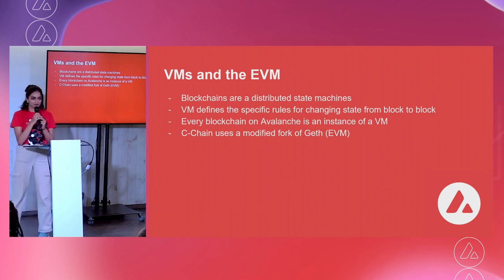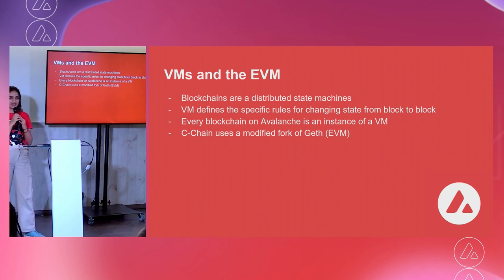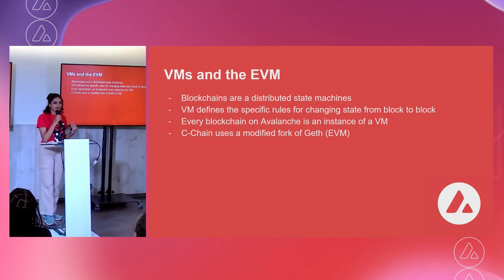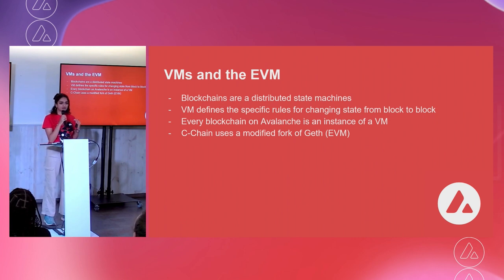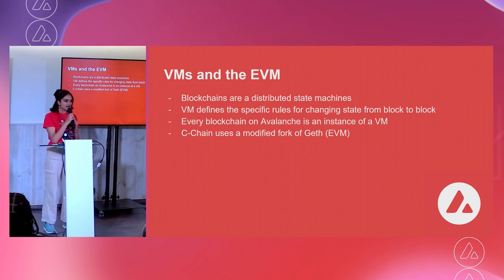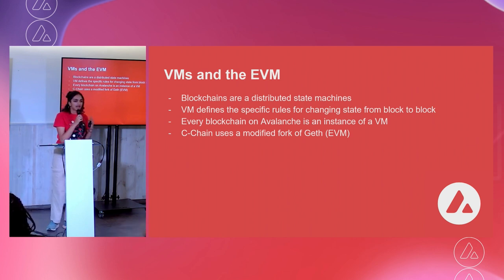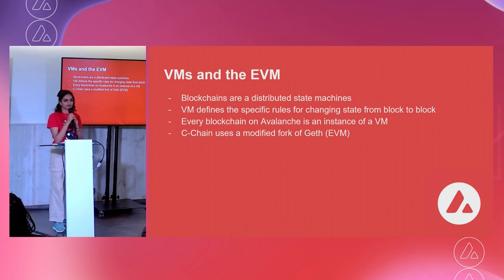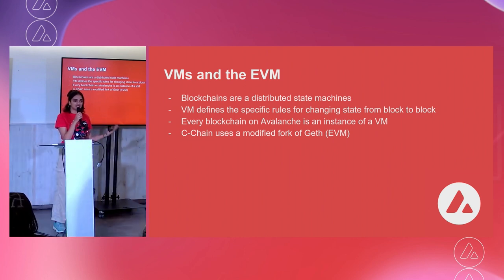Just some information about the VM. Blockchains are nothing but distributed state machines. The VM defines specific rules for the blockchain — it defines the state transitions, the state, how the transaction should look, and the API. Every blockchain on Avalanche is an instance of a VM. In the case of the C chain, it is an instance of the EVM.